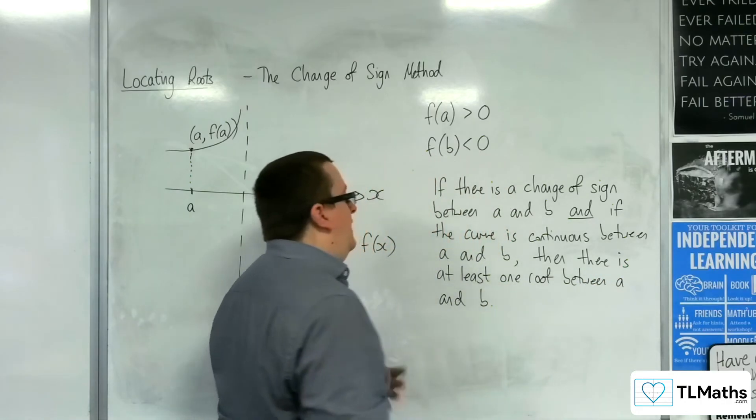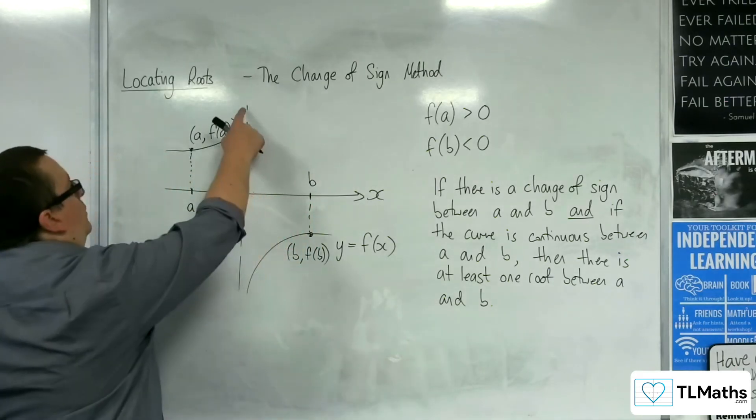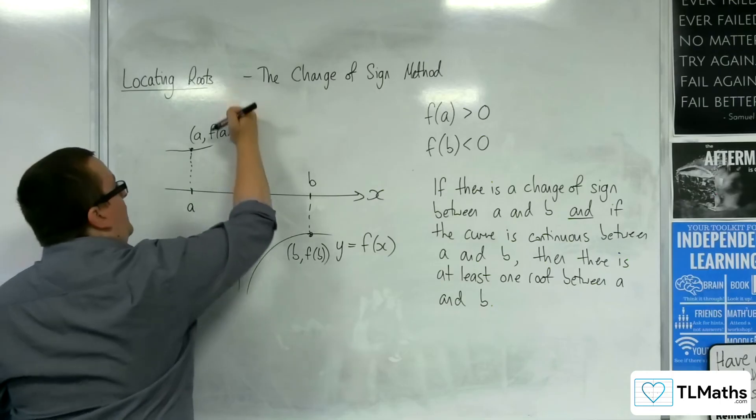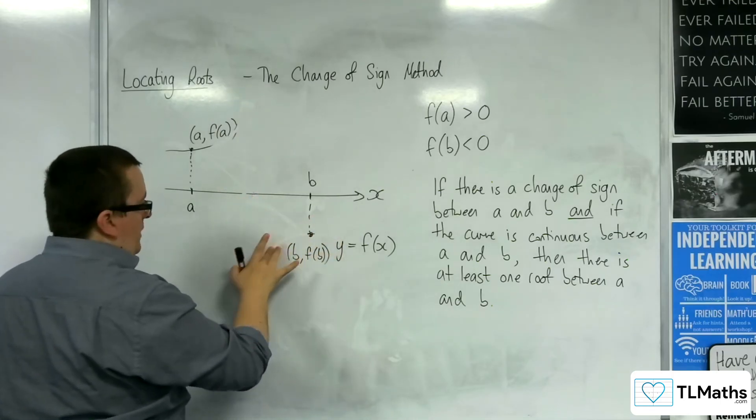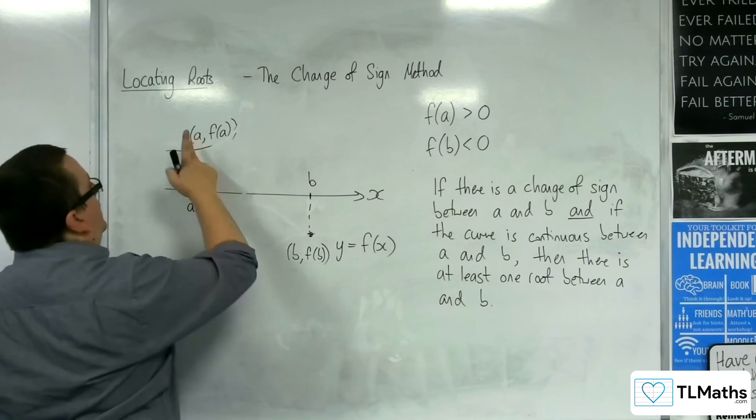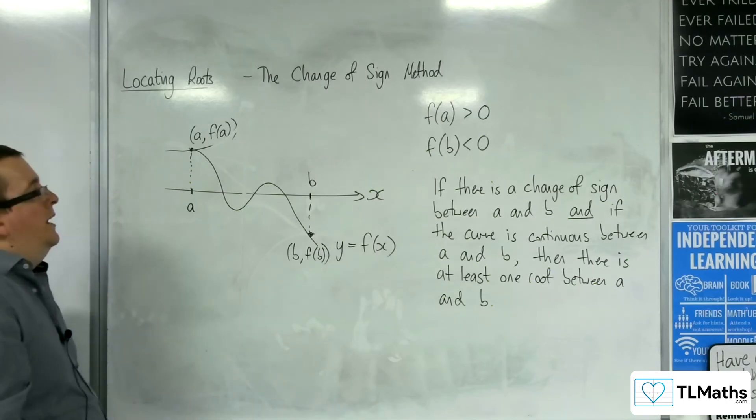Now the reason why I say there is at least one is because we could have a situation. Let's get rid of that asymptote now. There is no reason why the curve couldn't have done something like this.